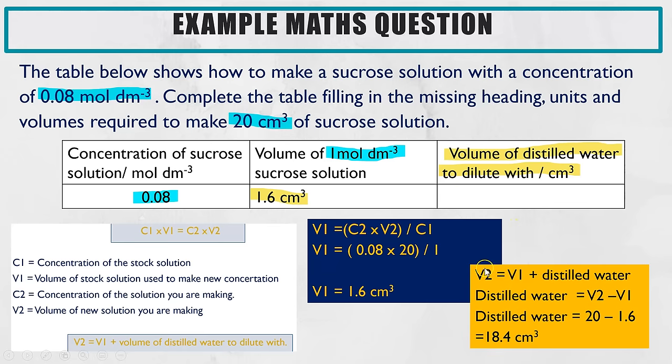Now it's time to use the second formula to work out what is the volume of distilled water that we need to use. So I've rearranged the formula because this one here is V2 as the subject but we want distilled water to be the subject of the formula to work out the volume we need. So V2 minus V1, 18.4 centimetres cubed. Now you don't actually have to put the units within the body here if they're in the header so just bear that in mind.